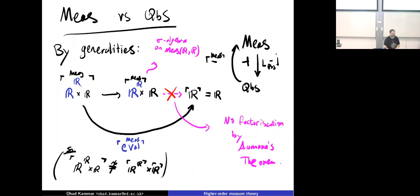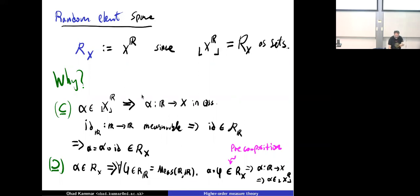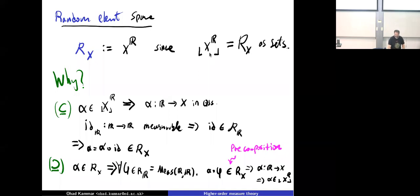One thing we can do is internalize what it means to be a random element. If I have any quasi-Borel space X, I can look at the function space X^R — functions from R to X. It turns out that the points in that space are exactly the random elements of X.